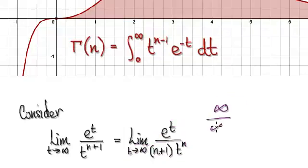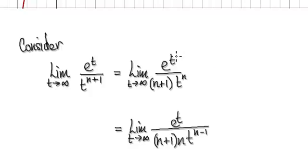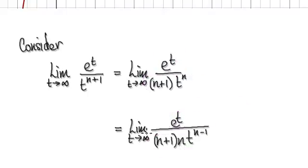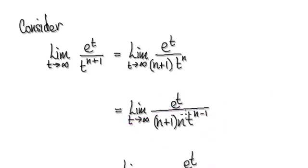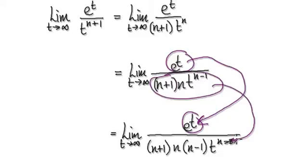Since it's still an indeterminate form, you can apply L'Hôpital's rule again and differentiate. Applying L'Hôpital's rule: differentiate the numerator — that gives you this — then differentiate the denominator — that gives you this. Now check again: as t heads to infinity, the numerator goes to infinity and the denominator goes to infinity. Apply L'Hôpital's rule again. Differentiate the numerator and differentiate the denominator.